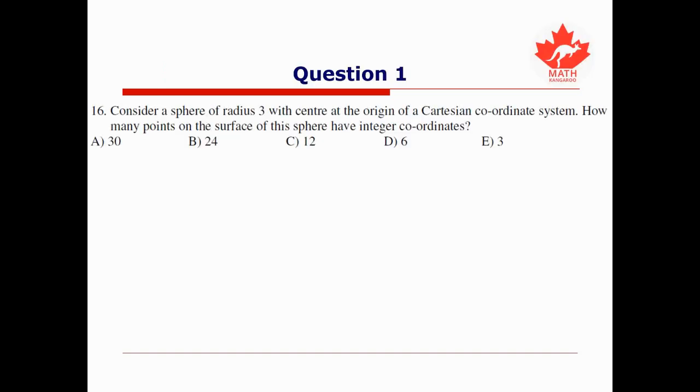So in this first question we're asked to consider a sphere of radius 3 with center at the origin of a Cartesian coordinate system, and we're asked how many points on the surface of the sphere have integer coordinates. So recall that the equation for a sphere with radius 3 centered at the origin is x² + y² + z² equal to the radius squared, so 3², which is 9. And so we want to know how many different choices there are for x, y, z such that they satisfy this equation.